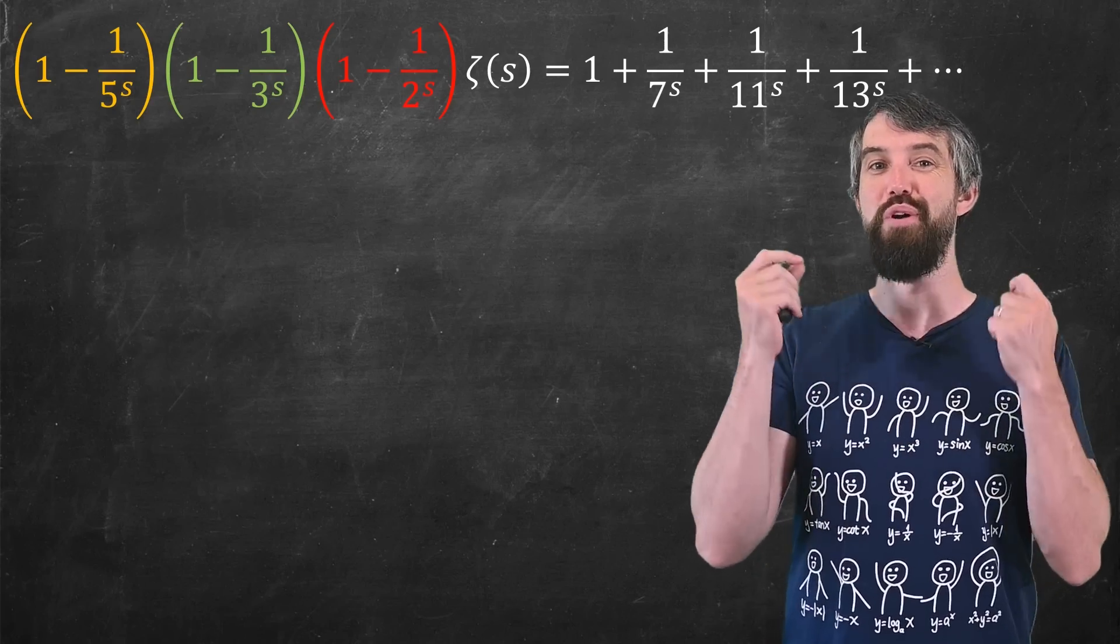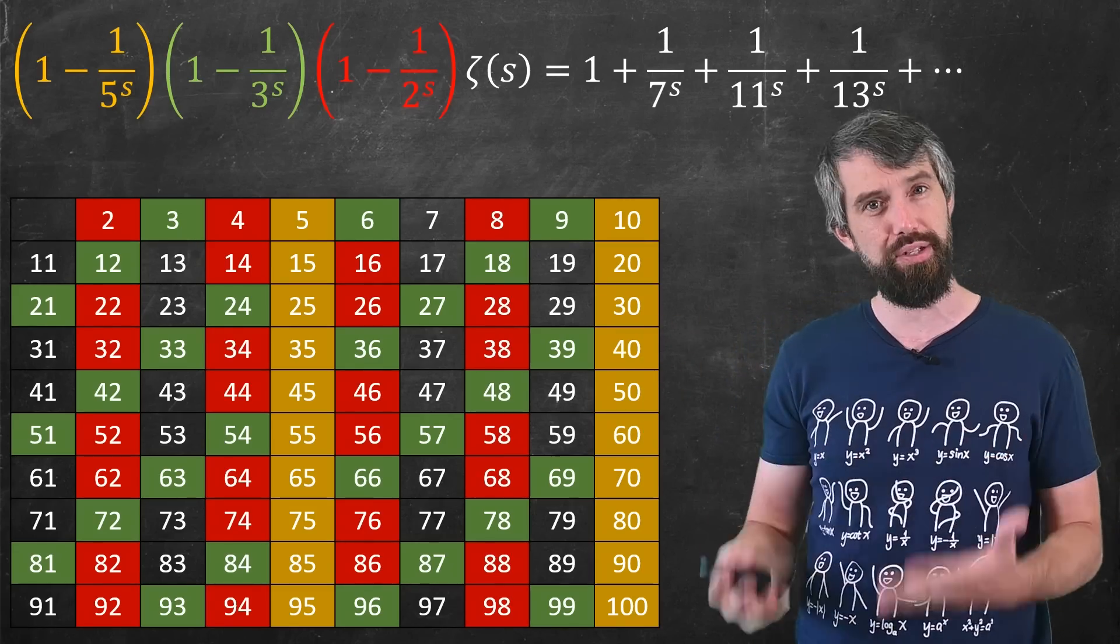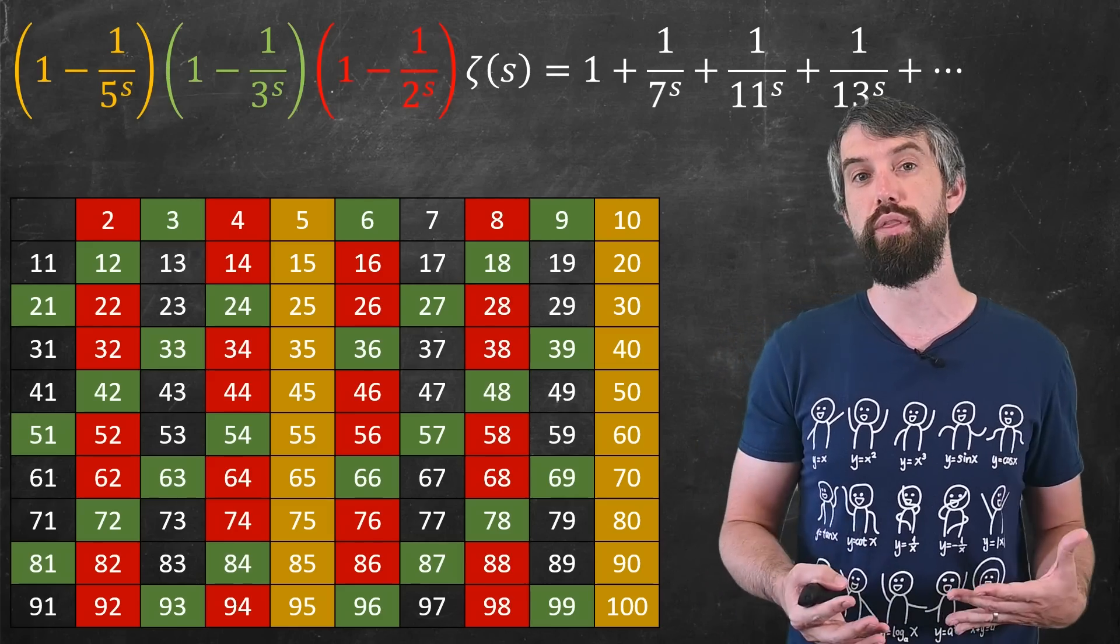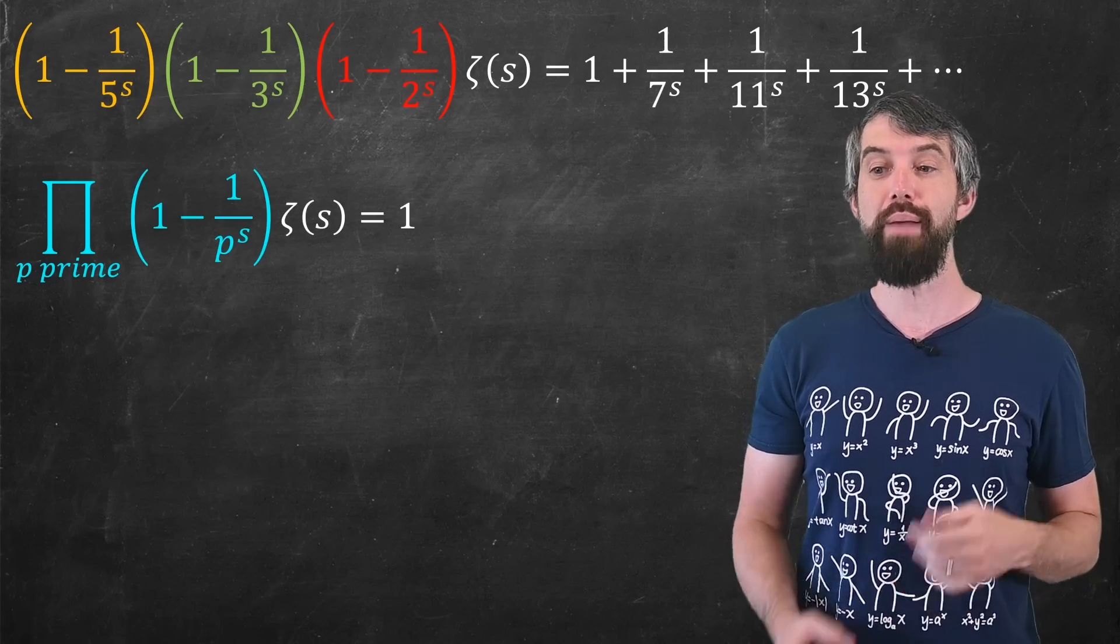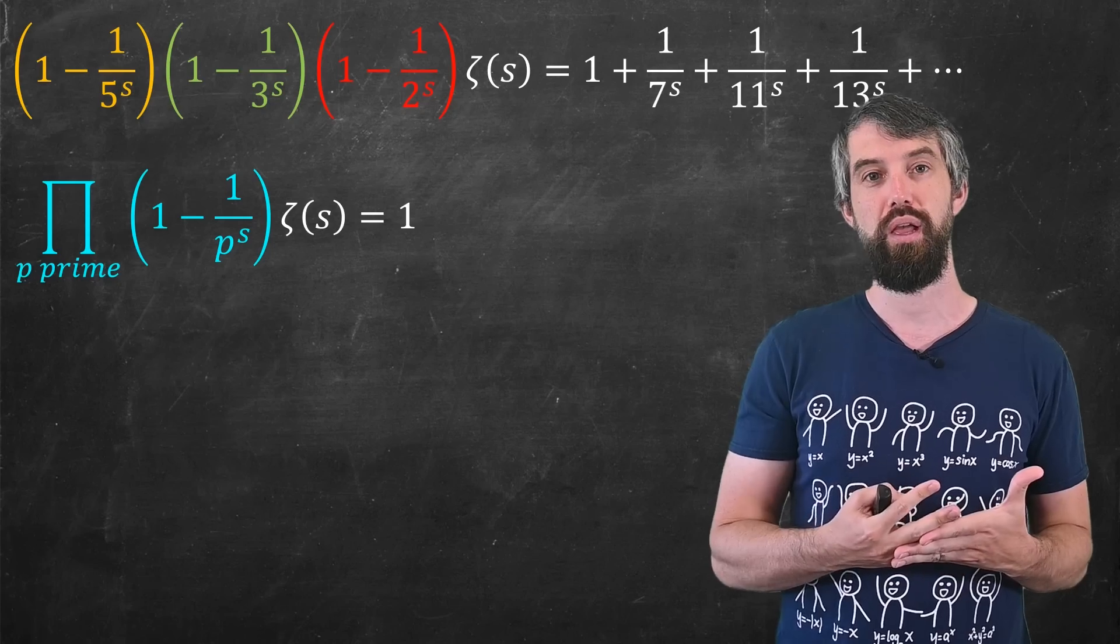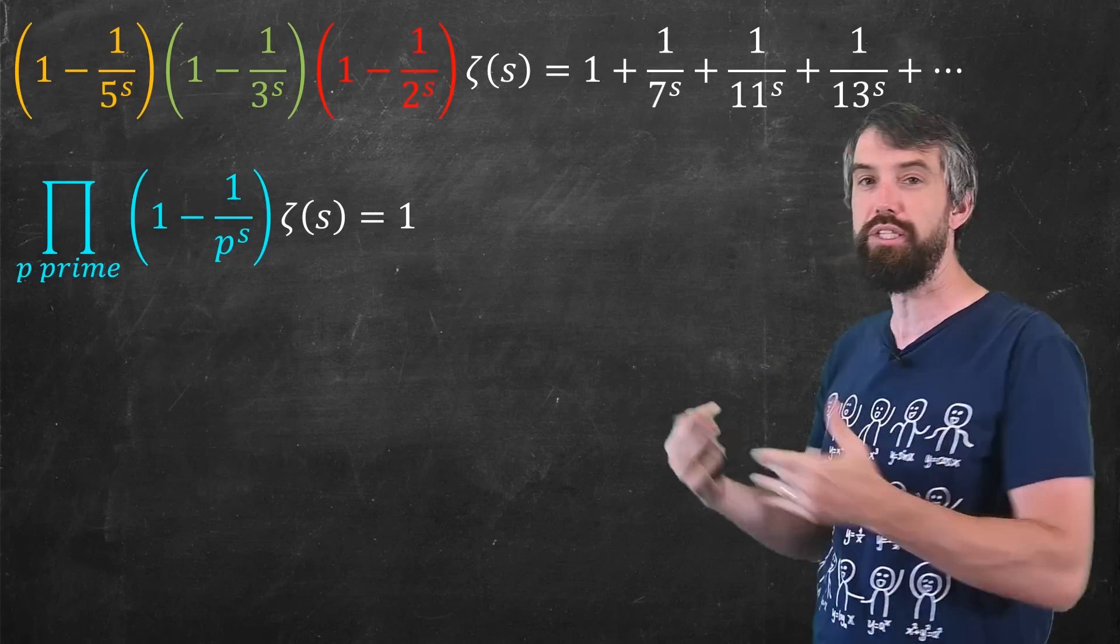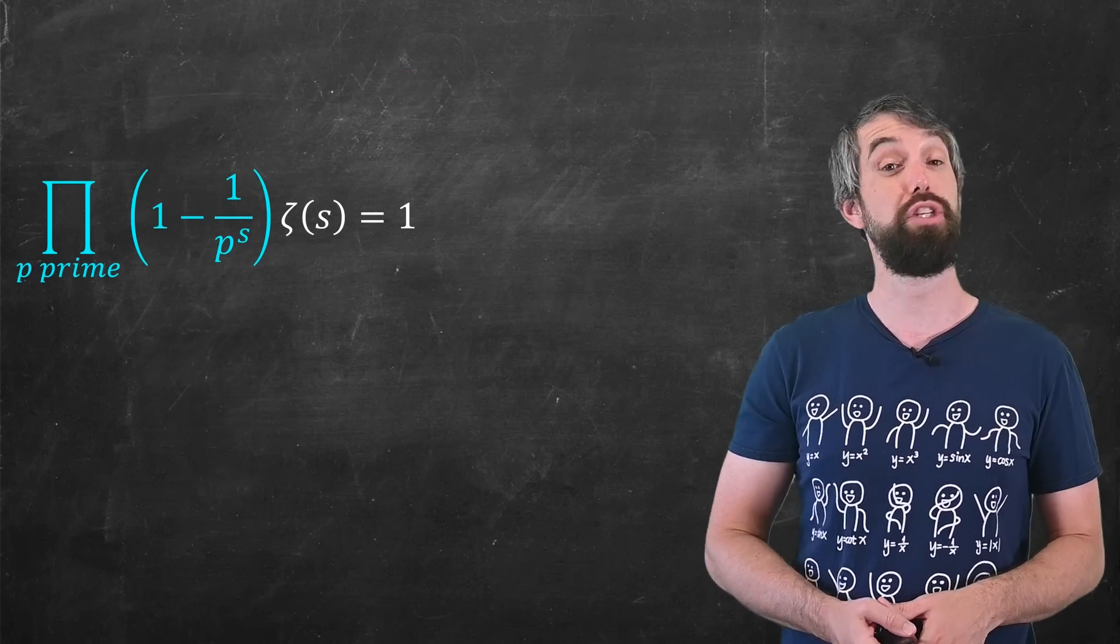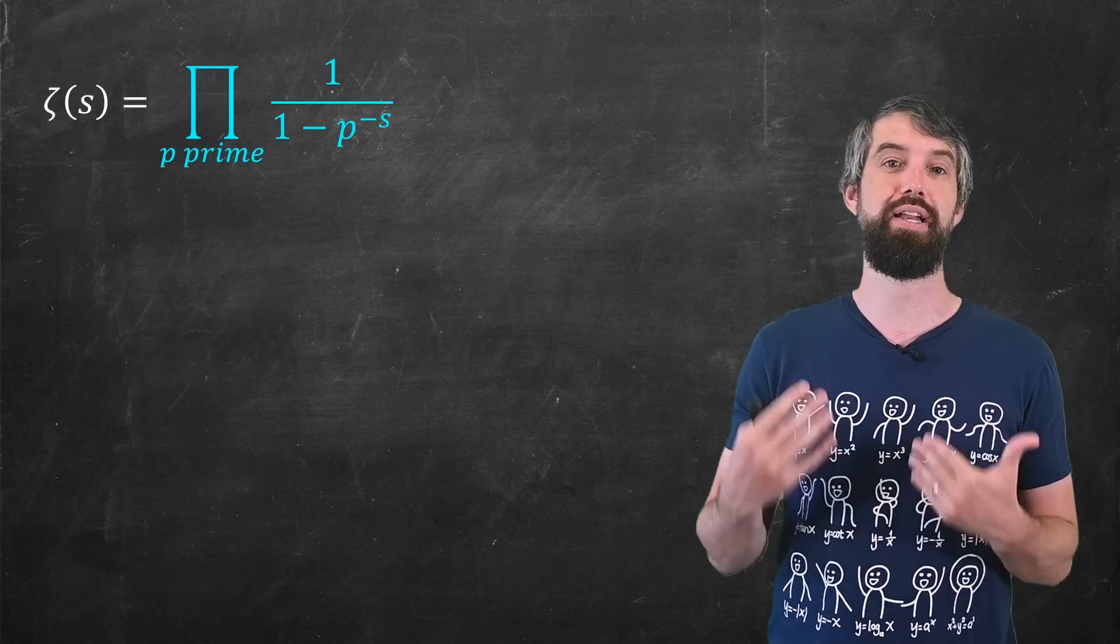I can keep on going and filtering along. The next one will be 1 minus 1 over 5 to the s. That gets rid of all the multiples of 5. And so if I keep on doing this, multiplying by factor after factor after factor, and I just do that for all of the primes, then what I'm going to get is that the product of all the primes of expressions that look like this, 1 minus 1 over a prime number to the s. Well, on the right hand side, I've gotten rid of the 2s, the 3s, the 5s. If I keep on going, getting rid of all these prime numbers, the only thing that's going to survive is the value of 1. And so this product of primes times this zeta function is equal to 1. Then to capture the formula, it's just a matter of dividing through, and this gives me that zeta of s is the product of 1 over 1 minus p to the minus s. And then reminding ourselves of what the zeta function was, I get Euler's product formula.